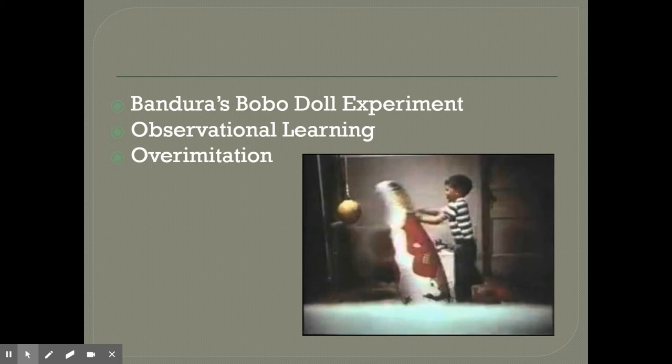What's really interesting is that some of them even went further and began using other toys to do violent actions towards the Bobo doll, including the use of guns, even though that was never shown in the original model. Essentially what we're seeing here is observational learning — when we learn through watching somebody else do something.